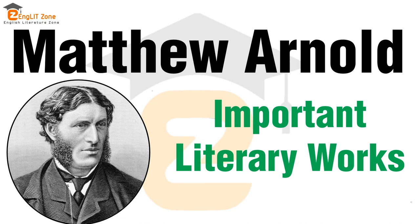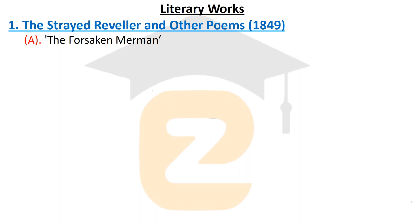Let's start today's video on Matthew Arnold's important literary works. The first work on the list is The Strayed Reveller and Other Poems — this is the first publication, the first poem published by Matthew Arnold in 1849. Included in this publication was also 'The Forsaken Merman.'